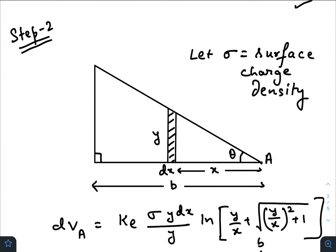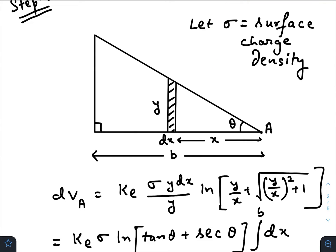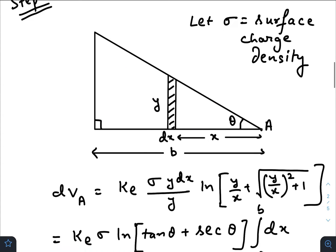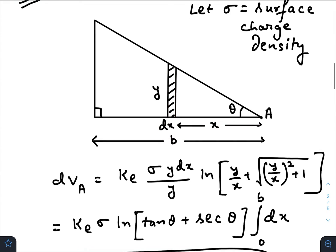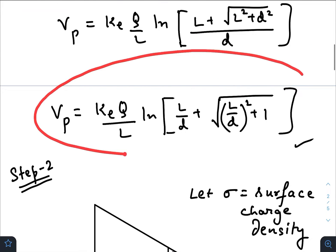Step two: Now we will find out the potential at any one of the vertices of a triangular lamina having surface charge density sigma. Let this acute angle be theta, and I am dividing this whole triangular lamina into infinite number of strips. Let us consider one such strip at a distance x from the vertex, running along the base, of thickness dx and height dy.